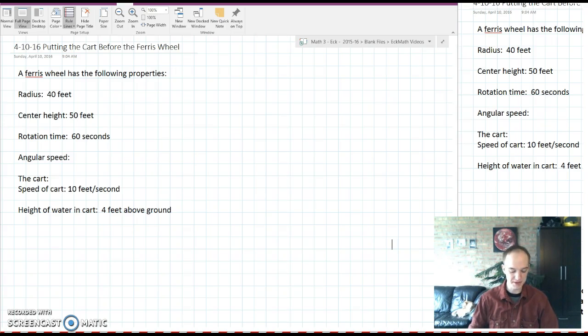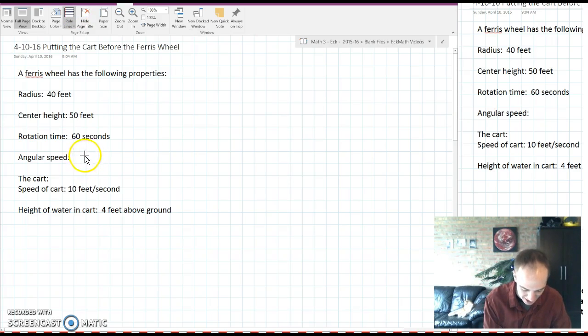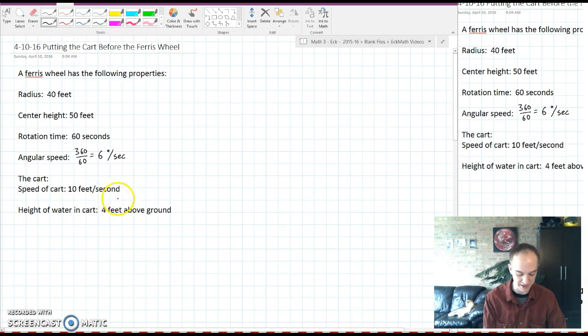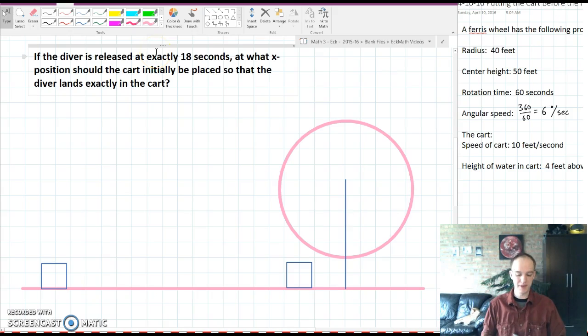We're going to say that our new Ferris wheel has a radius of 40 feet, a center height of 50 feet, a rotation time of 60 seconds. The first thing that we're going to find is that the angular speed of the Ferris wheel can be found by doing 360 divided by 60 which gives us a speed of 6 degrees per second. We're also going to say that the cart goes at a speed of 10 feet per second and that the height of the water in the cart is 4 feet above the ground.